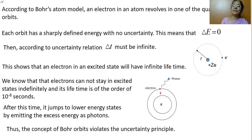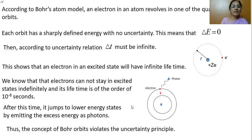The concept requires that the moment electrons get excited to a higher energy level, they return back by giving out the excess energy as light. Only for a limited time — of the order of 10 to the power minus 8 seconds — can an electron stay in the excited state before emitting photons and returning to ground state. Thus, the concept of Bohr orbits violates the uncertainty principle, and that is why Bohr's atom model met with many failures.